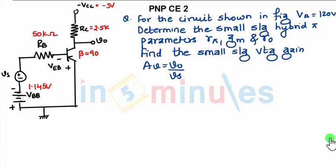Hi, welcome to In 5 Minutes. Next problem is again based on PNP type, Common Emitter Configuration. That is example 2, I am writing it as 2.